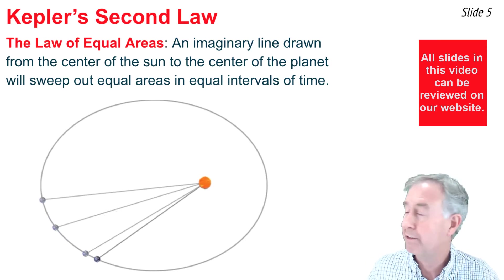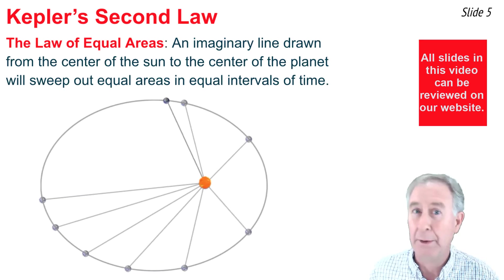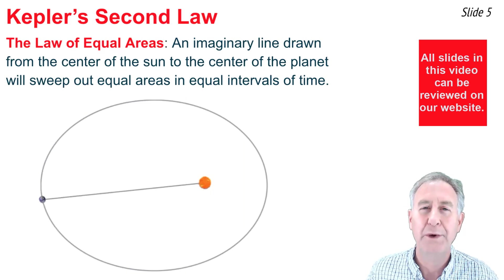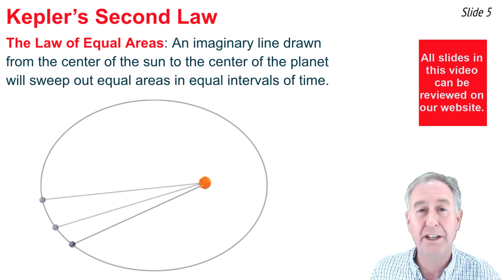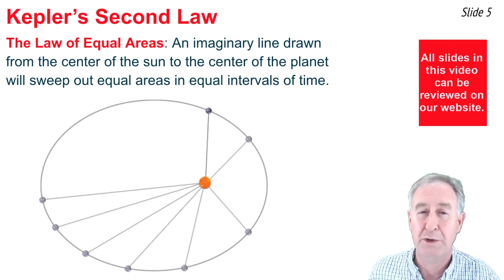Here we see an animation of a planet orbiting the sun, and the entire period, or time, around the sun is divided into 12 equal time periods. The location of the planet at the end of each time period is shown, and the alignment of that imaginary line is shown as well.